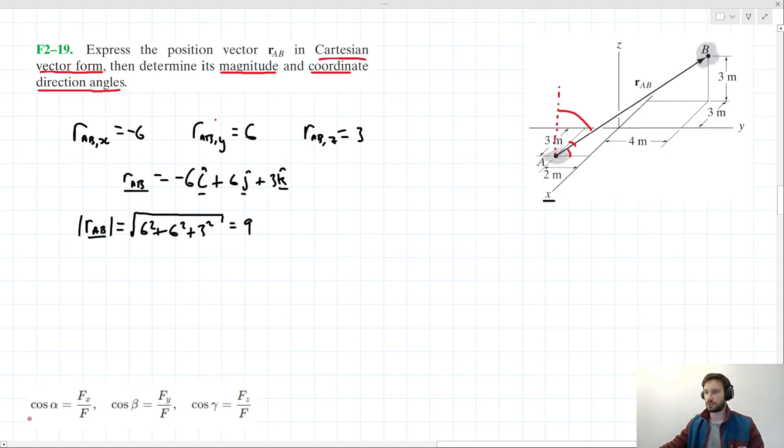We have the formulas for those direction angles given here. Let's write this out then. We can say that cos(α) is going to be equal to its x component over its magnitude. So its x component is -6, and its magnitude is 9.